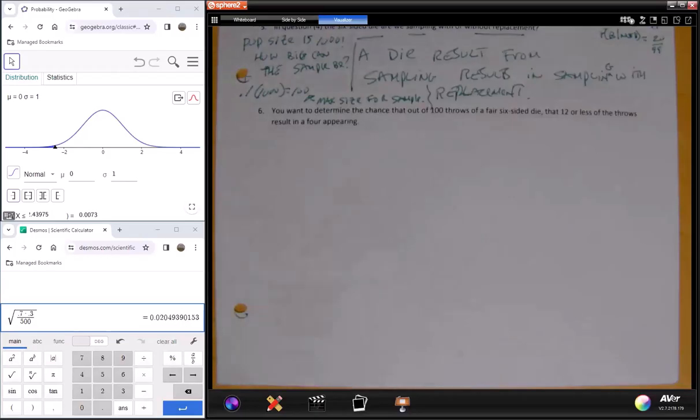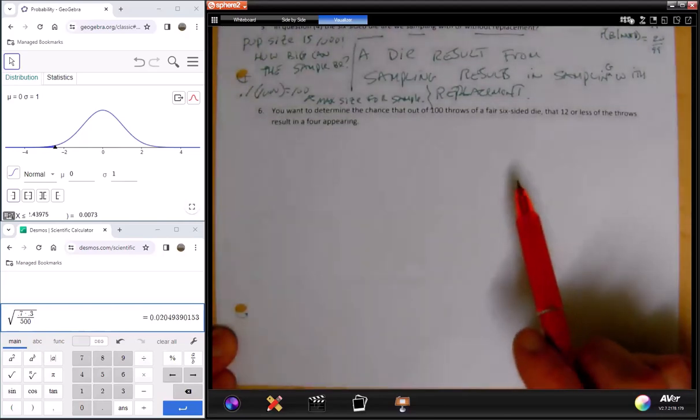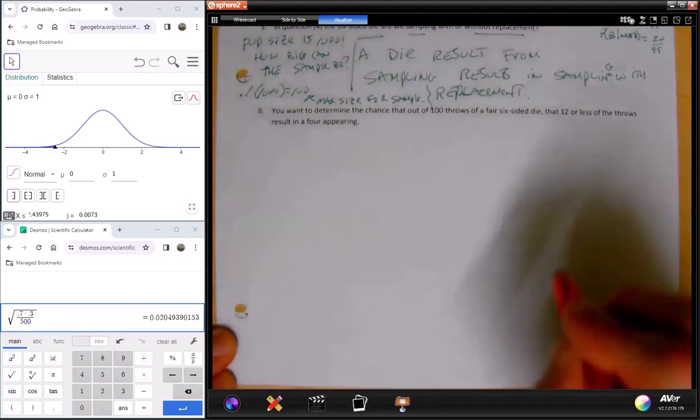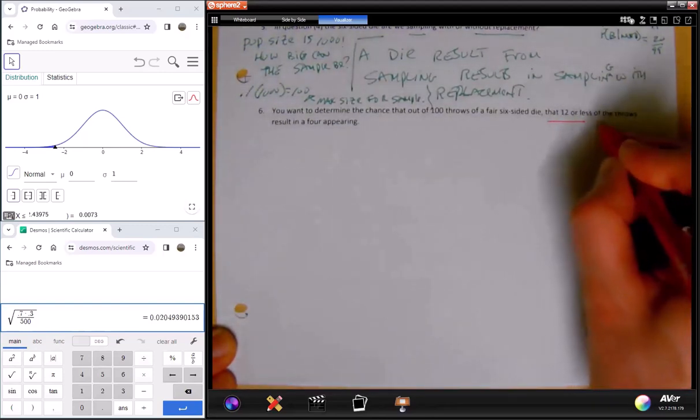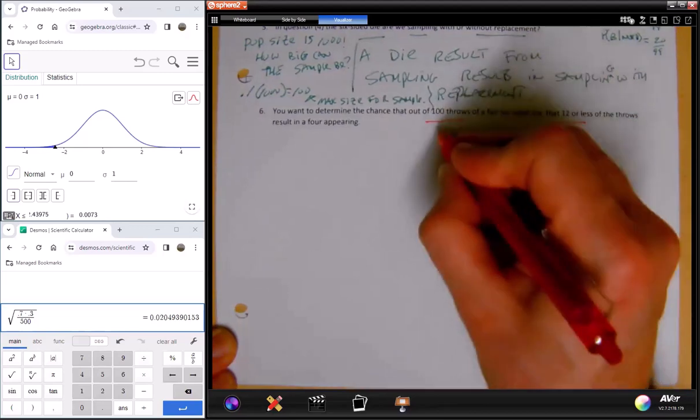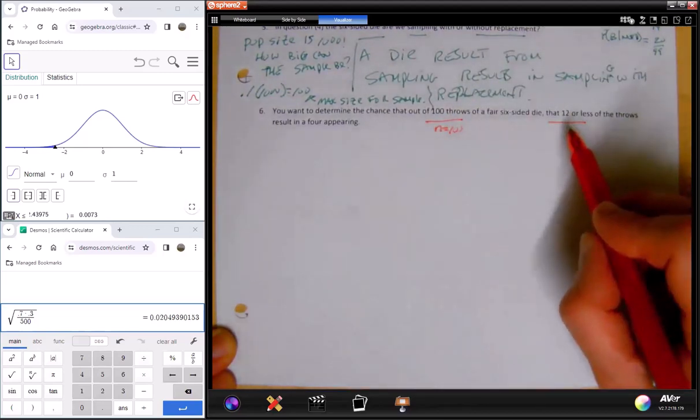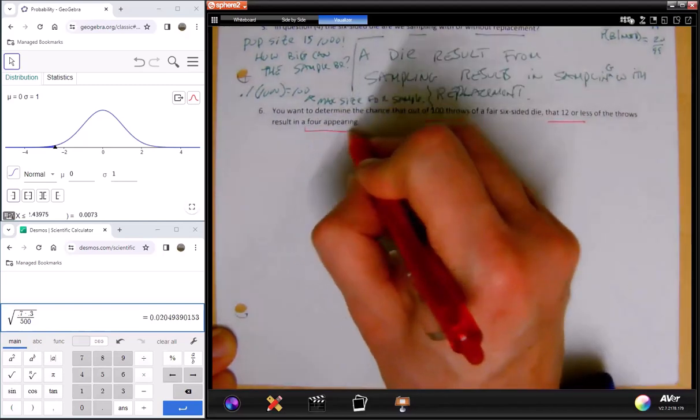Let's look at this question. You want to determine the chance out of 100 throws from a fair six-sided die that 12 or less of the throws result in a four appearing. So 12 or less out of 100 - this is my sample size, it's 100, and I want a four appearing as success.